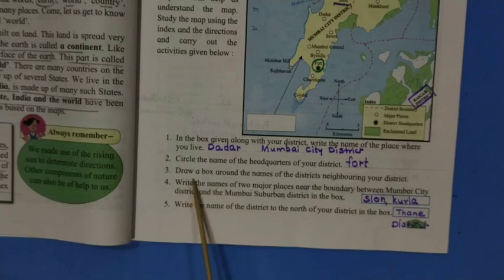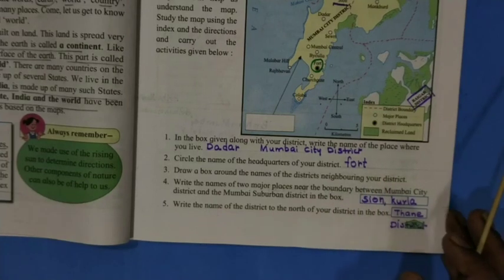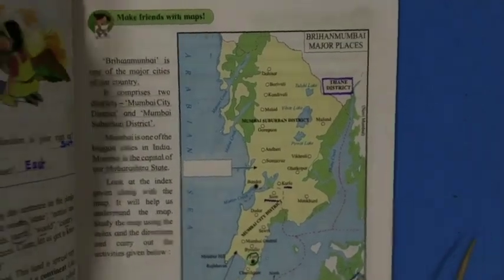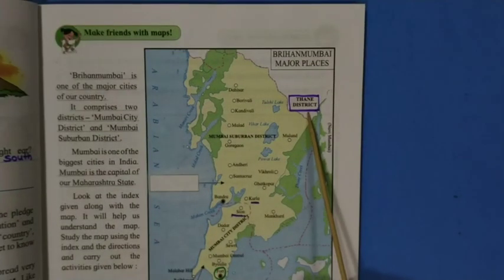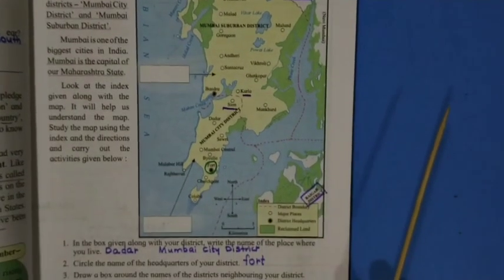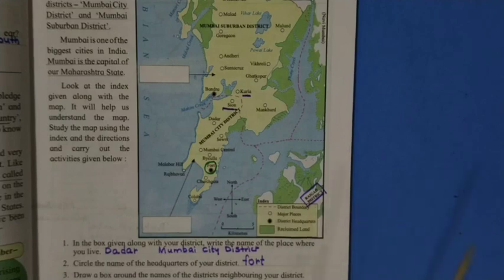Next question: draw a box around the names of the districts neighboring your district. The districts neighboring my district are Thane District and Raigad District.